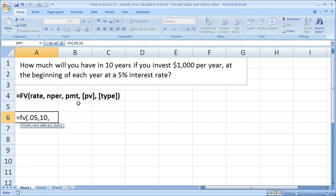For the payment, you're going to invest $1,000 every year. So you put $1,000 for the payment.